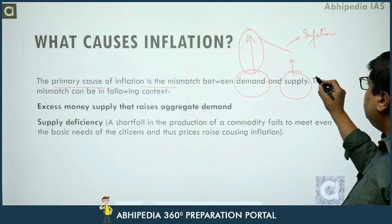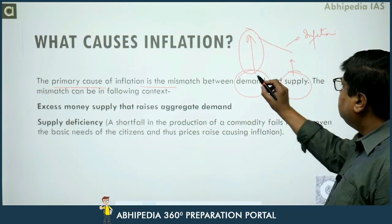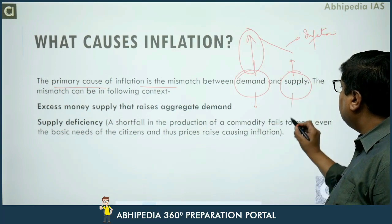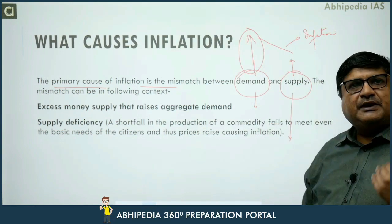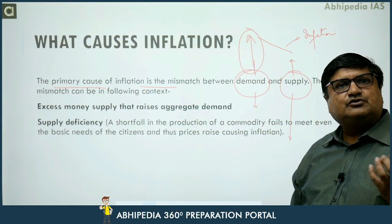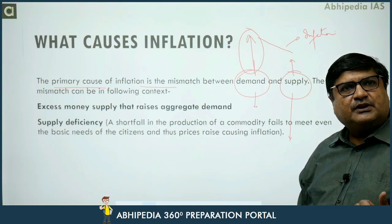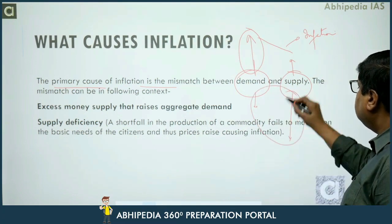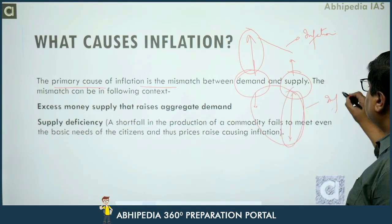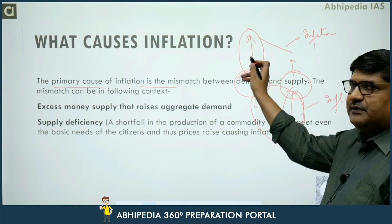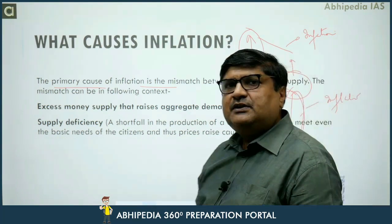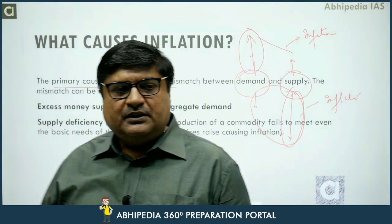Lekin aisa bhi ho sakta hai ki demand is same, but the cost of supply increases — matlab cost of production increase ho rahi hai. So that may also cause inflation. That will be a supply side factor. But there has to be some mismatch between demand and supply.